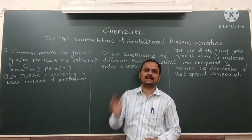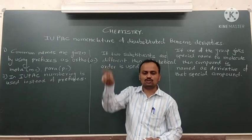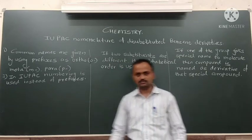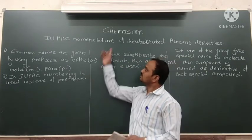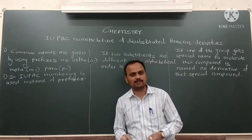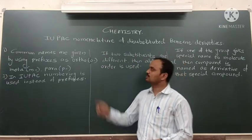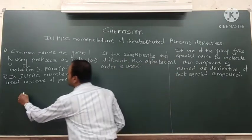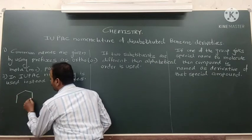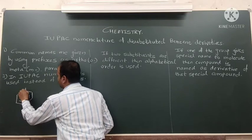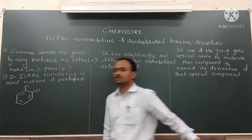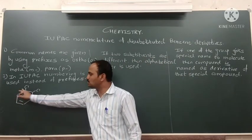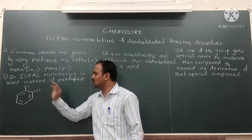Instead of writing ortho, meta, and para, we use numbering 1, 2, 3, 4, 5, 6. We will start with the first example of di-substituted benzene. In this compound, we have taken a benzene ring and two hydrogen atoms are replaced by two chlorine atoms.